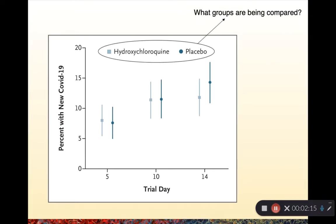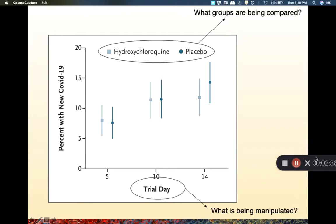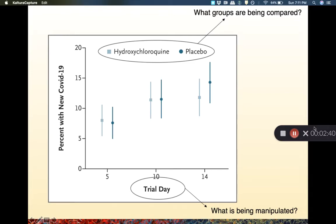The first thing we want to note in this figure is that there are two colors on this graph. What groups are being compared? In this case we have hydroxychloroquine and then we have the placebo. We're looking at those specific groups in this graph. The next thing we want to understand is what is being manipulated.